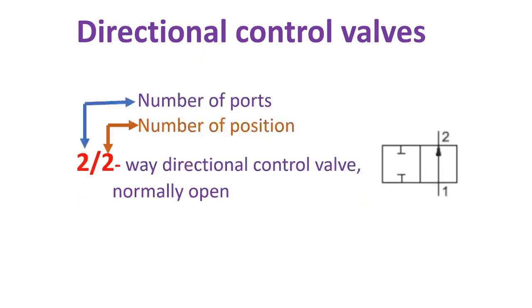This is one of the examples of directional control valves. The first letter represents the number of ports, and the second letter represents the number of positions.